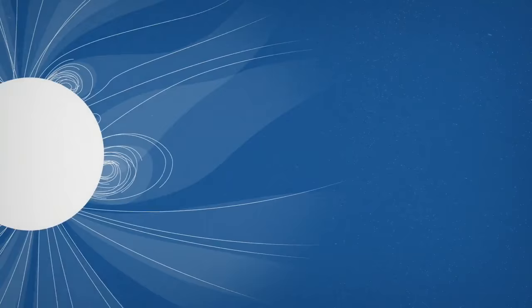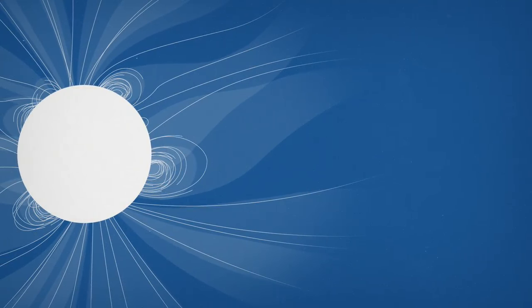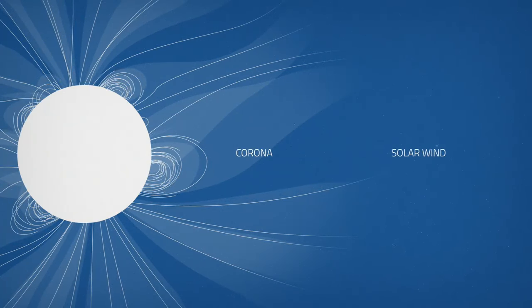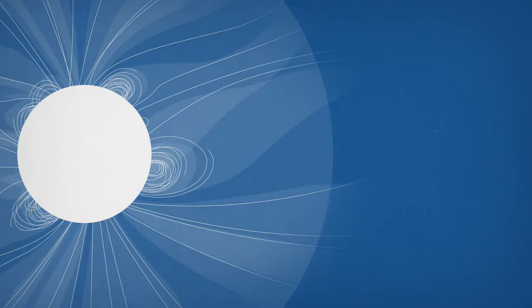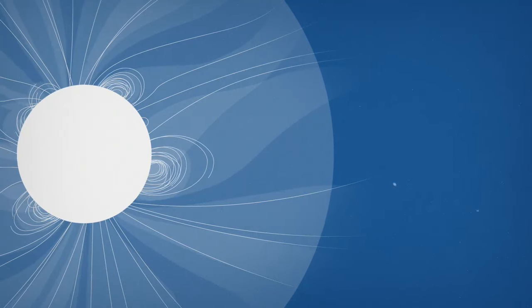New research indicates that there is a discernible transition between the corona and the solar wind. This difference is marked by a visible change in the consistency of solar material departing the Sun.